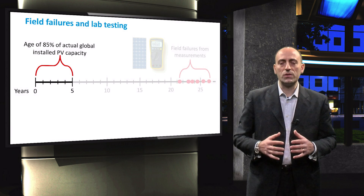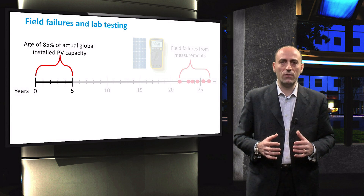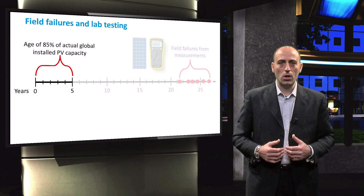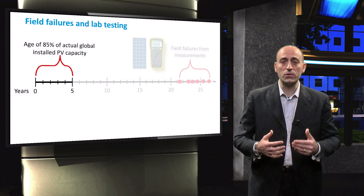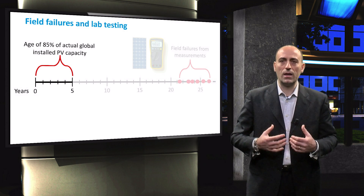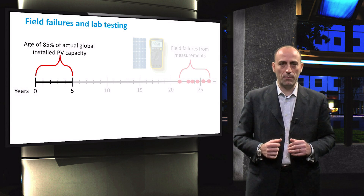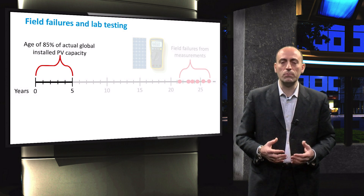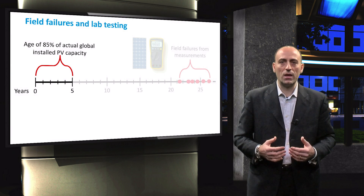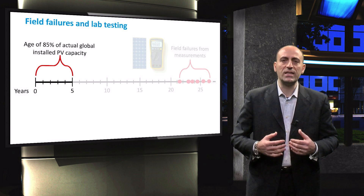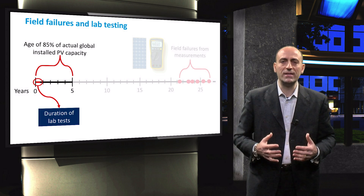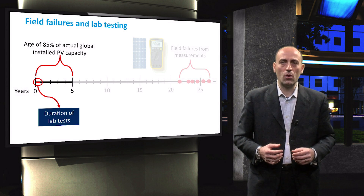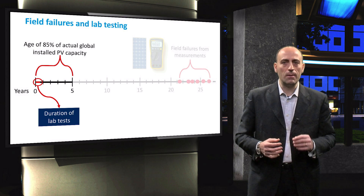Currently, almost 85% of the 234 GW of installed global PV capacity has been in the field for less than 5 years. Thus, it would require approximately 20 more years of data collection in the field to assess the reliability of the majority of today's installed PV capacity. Since investors would like to know the lifetime and reliability of PV modules beforehand, various reliability tests have been developed. These tests accelerate the stress that the modules might endure during their lifetime. Hereby, we gain insight in the aging behavior of the equipment and in the failure mechanisms in a much shorter timeframe.